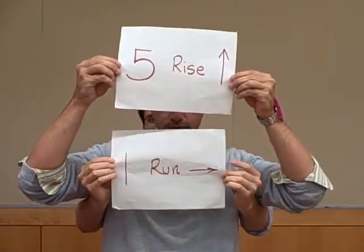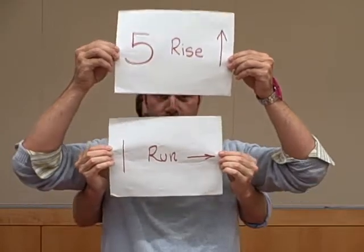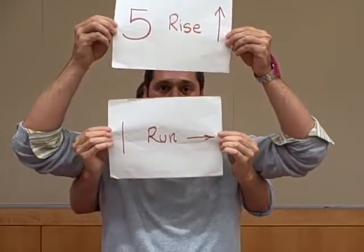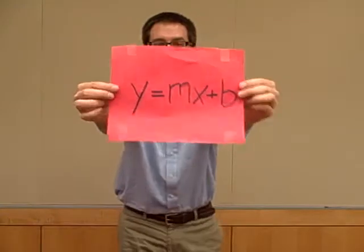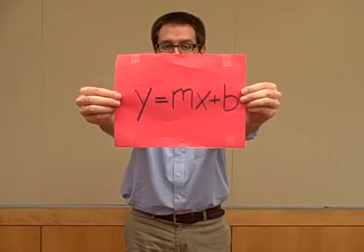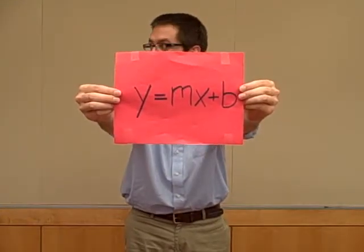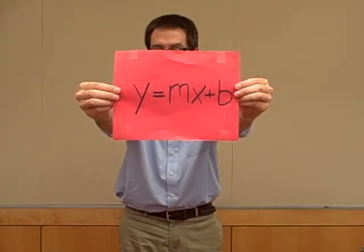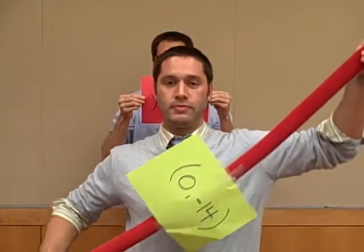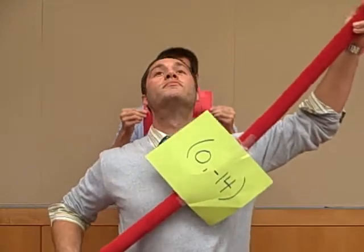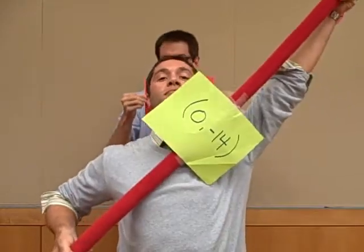Out of cover, take the rise over the run. You've got to rise before you run. Up five and over one. The equation of a line: y equals mx plus b, that crosses y. That's the intercept we're trying to find, so we can always be zero comma y.